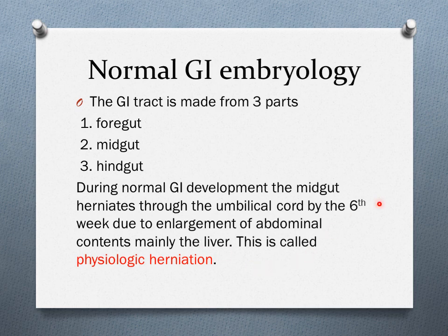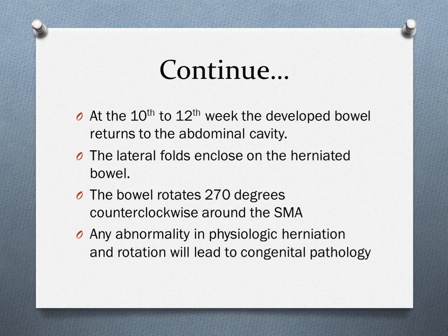This happens because as part of the normal development of the liver around that time, the liver will enlarge very rapidly. The abdominal cavity is still not large enough to house the rapidly enlarging liver and the developing midgut, so the liver forces the midgut to herniate through the umbilical cord. It's very important to note that this herniation is physiological — part of normal development — unlike the hernia we find in adults, which is pathological.